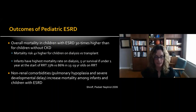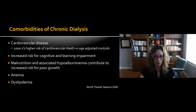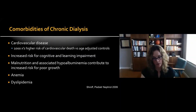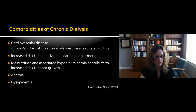Children born with poor renal function and early onset ESRD are not able to be transplanted until they are older — preferably above 10 kilos. These children are on chronic dialysis for a while, which carries a thousand times higher risk of cardiovascular death versus age-adjusted controls, increased risk for cognitive and learning impairment, malnutrition with associated hypoalbuminemia contributing to poor growth, and other issues like anemia and dyslipidemia.